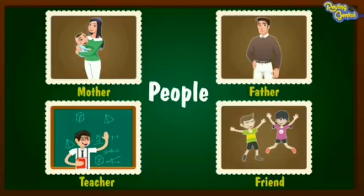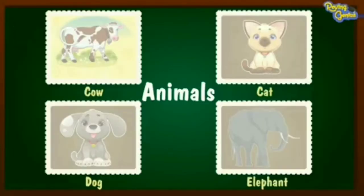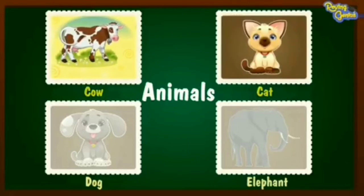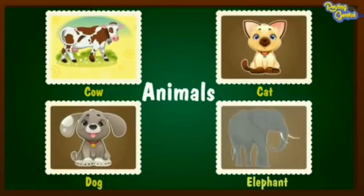Next, we will learn about animals. These are the examples of some animals: cow, cat, dog, elephant. Some other examples are goat, rabbit, lion, tiger, etc.